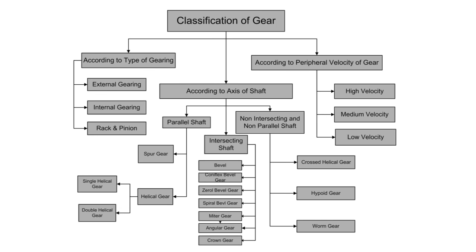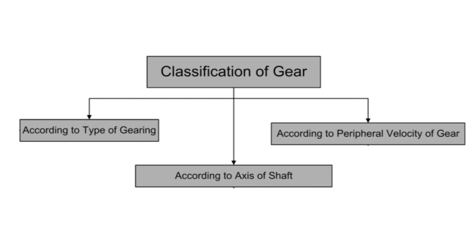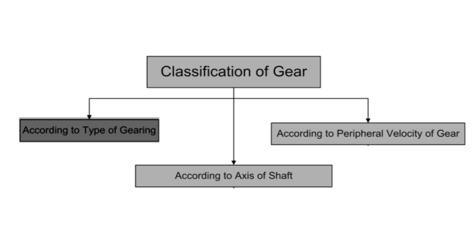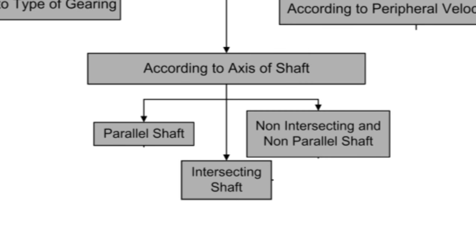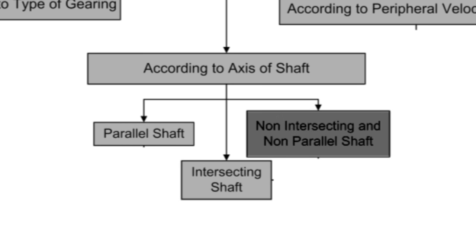This is a flow chart of gear classification. Gears are classified into three groups: according to the axes of shafts, according to peripheral velocity of the gear, and according to the type of gearing. According to the axes of shafts, gears are classified into three groups: parallel shaft gears, intersecting shaft gears, and non-intersecting or non-parallel shaft gears.